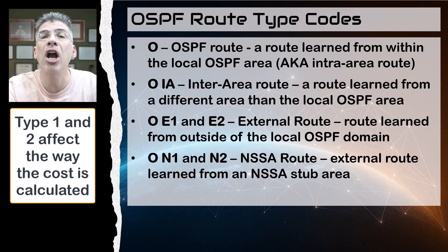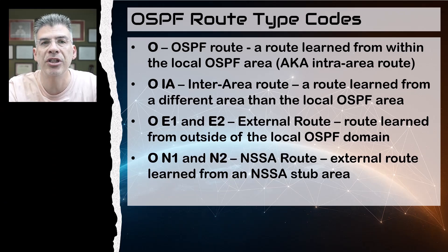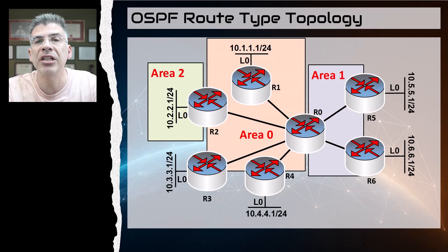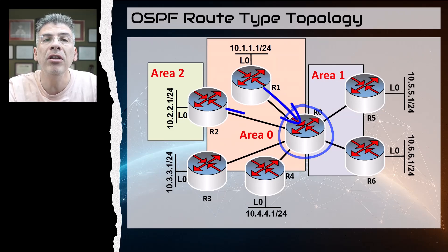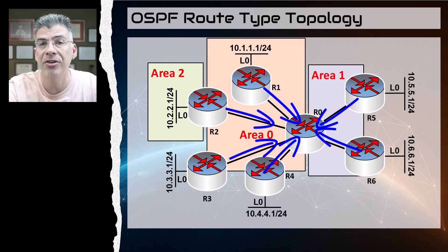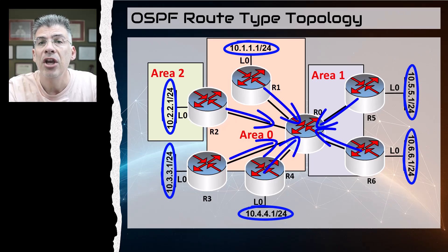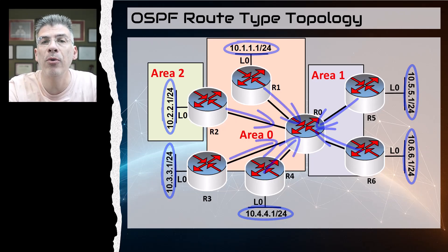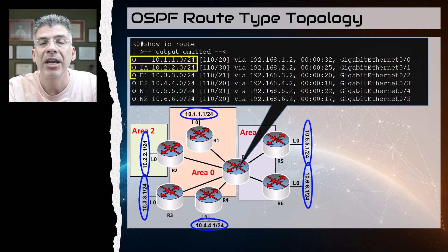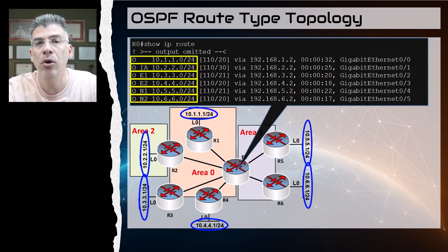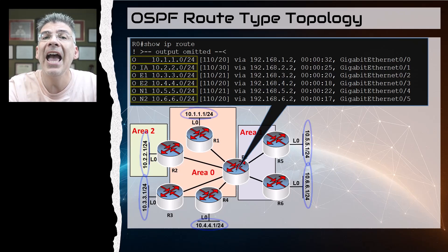Let's see how these routes are generated within a real OSPF topology. We'll be using this topology to describe how these routes are created and how they behave. This is our R0 router, which will receive all of the OSPF updates from routers R1 to R6. Each of these routers will advertise their single network on their loopback 0 interface to R0, and each network received will be a different type of OSPF route. Here you can see how each of these networks appears in router R0, each with a different network type code.